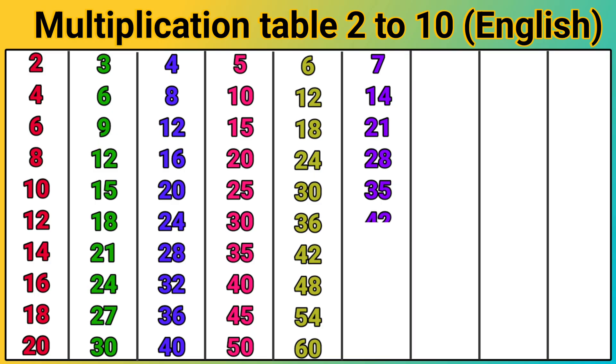7 6's are 42. 7 7's are 49. 7 8's are 56. 7 9's are 63. 7 10's are 70.